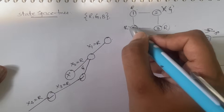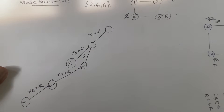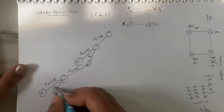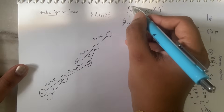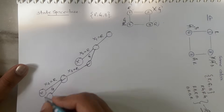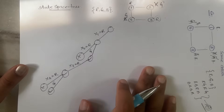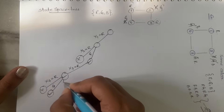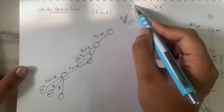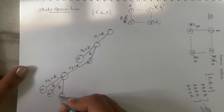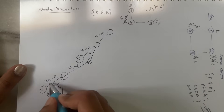Red is not accepted for x4 because x1 and x3 already have red and are adjacent. Let's check green for x4 — yes, green is accepted because the adjacent nodes have red, not green. Blue is also accepted for x4 because the adjacent colors are red and red. So we get two solutions at this level. Since we have reached x4, no further branching is needed.